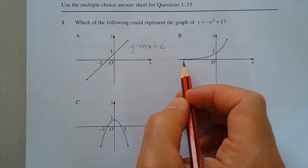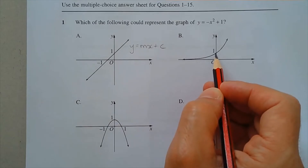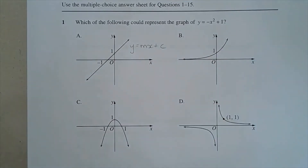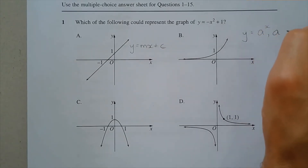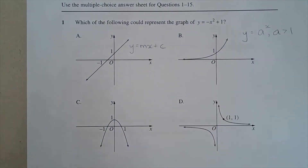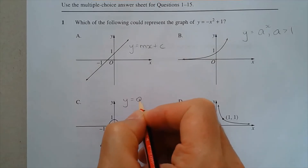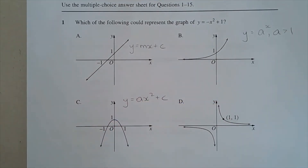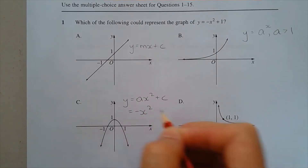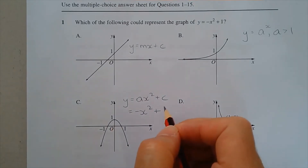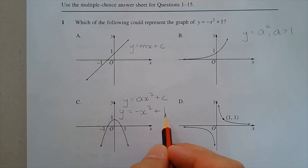Option C is a concave-down parabola, of the form y equals ax squared plus c, where a is negative. The y-intercept is 1, so it's y equals negative x squared plus 1. That's option C. Option D has two branches approaching the axes asymptotically — that's a hyperbola of the form y equals k over x. So the answer is option C.